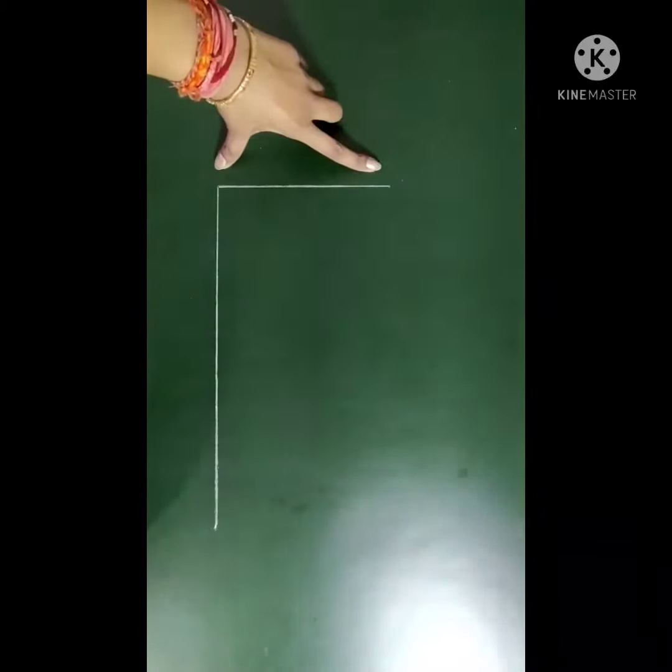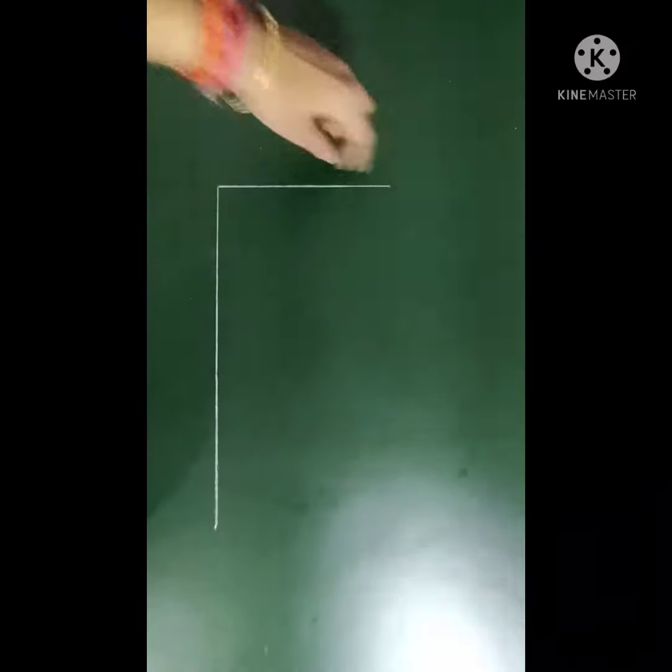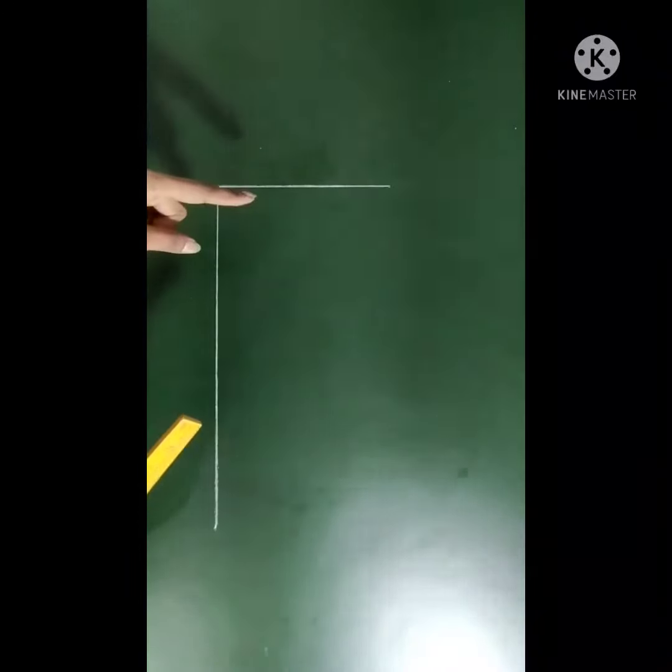Here we take shoulder 14 inches, then half of shoulder 7 inches, and chest 32 inches. For neck width we have to mark one-twelfth of chest plus one-and-half inch.